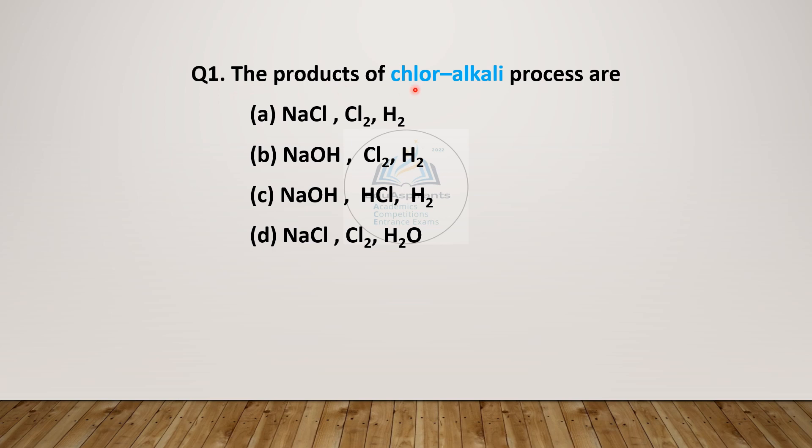Question 1. The products of chlor-alkali process are: A) NaCl, Cl₂, H₂, B) NaOH, Cl₂, H₂, C) NaOH, HCl, H₂, or D) NaCl, Cl₂, H₂O. Marked your answer? Let us see if we have marked it correct. Answer is B: NaOH, Cl₂, H₂ - sodium hydroxide, chlorine, and hydrogen.